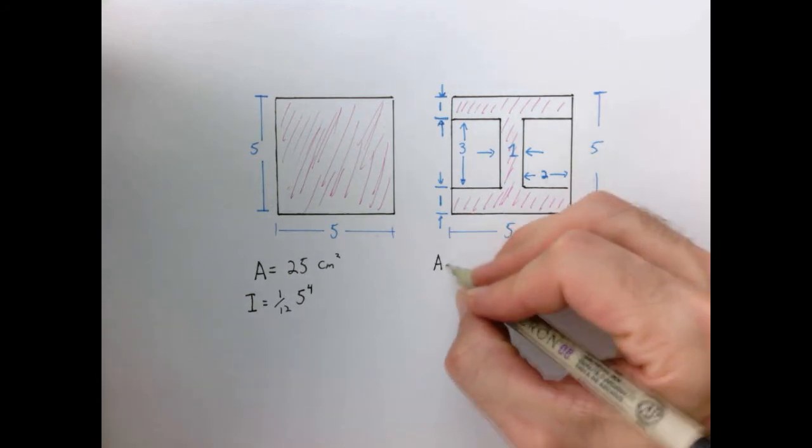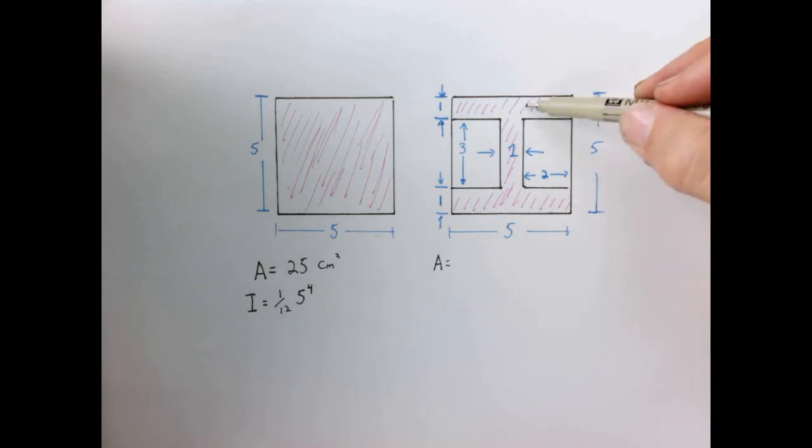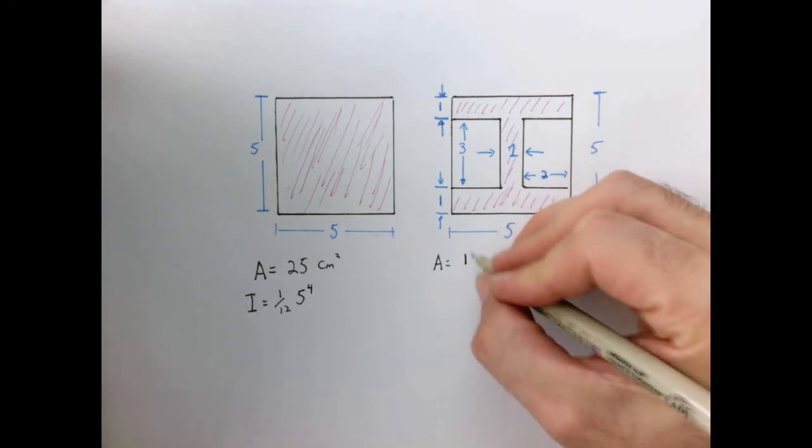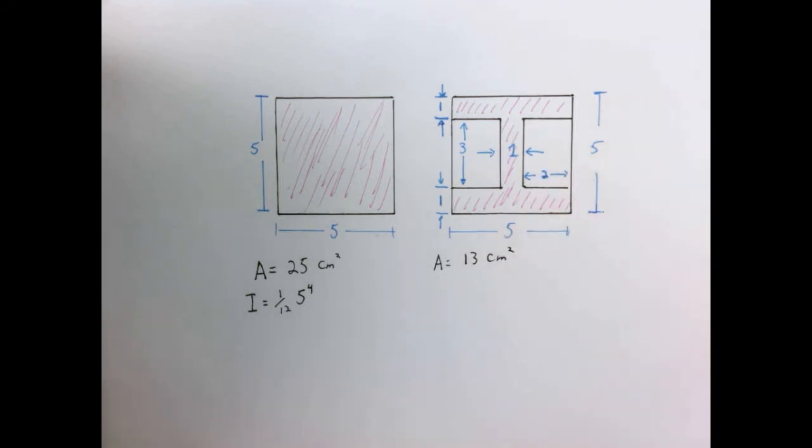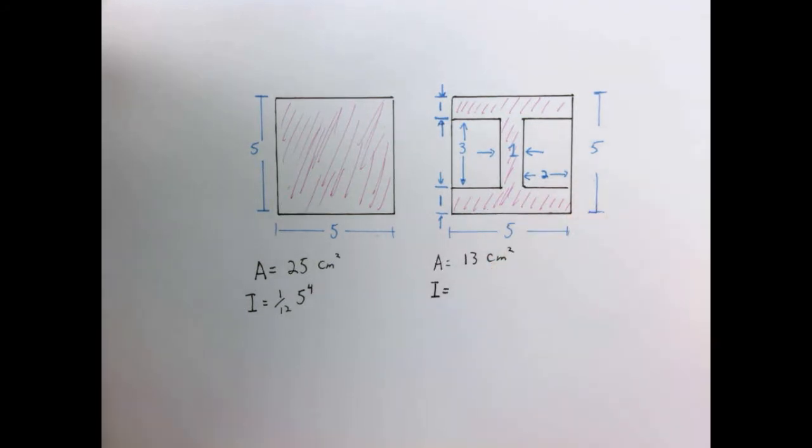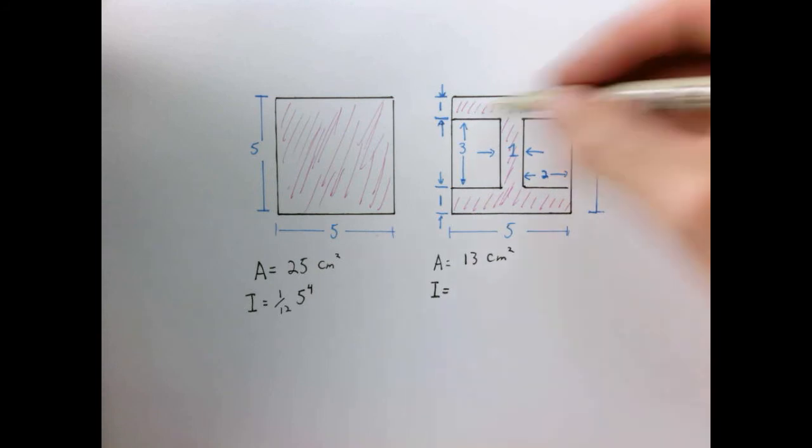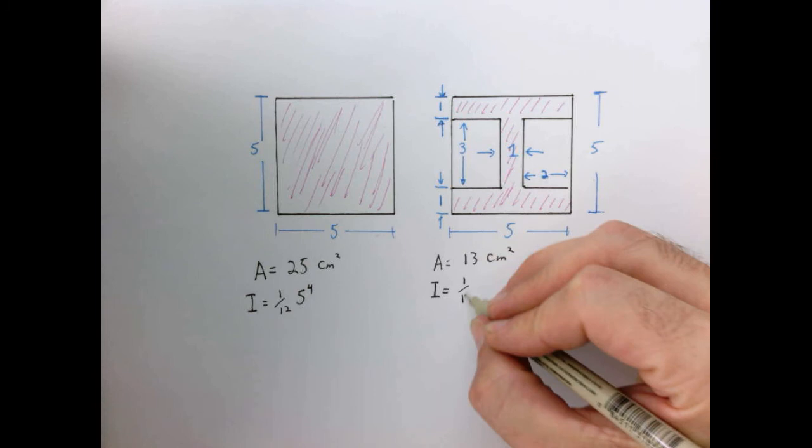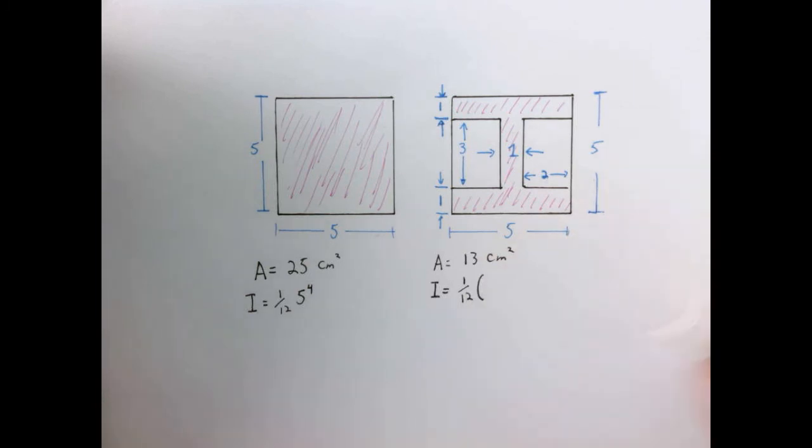In this case, the area is one by five, one by five, and one by three, so five plus five plus three is 13 centimeters squared. The moment of inertia in this case, remember, we take this whole area here, and then we subtract off these two side pieces. So it's going to be one-twelfth bh cubed of the large area, so five to the fourth power, so exactly what we had over here in the first case.